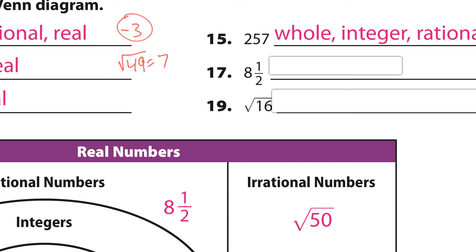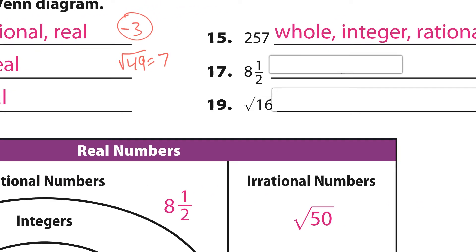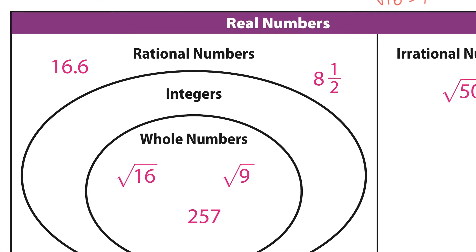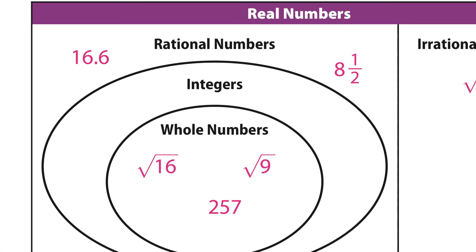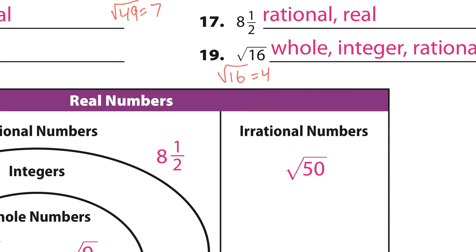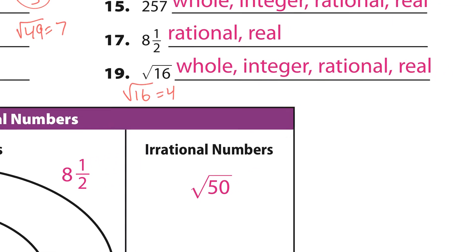Number 19: square root of 16. The square root of 16 is equal to 4, so you've got to keep your eye on that. Since 4 is a whole number, it's also integer, rational, and real — all of them. Whole number, rational, and real.